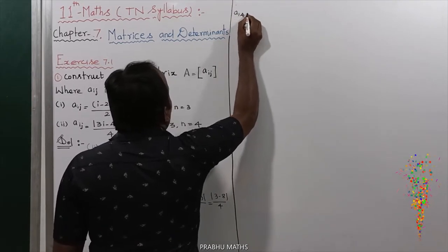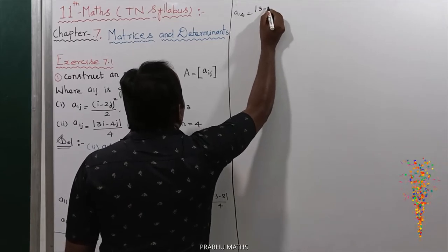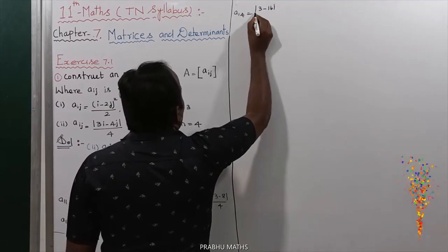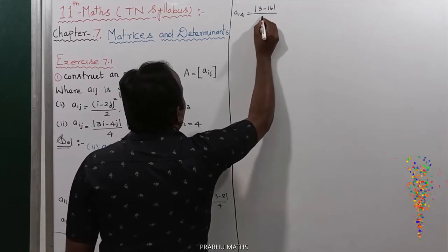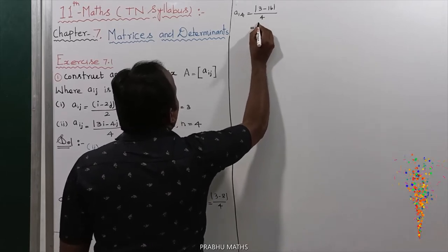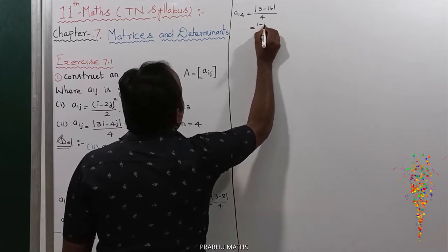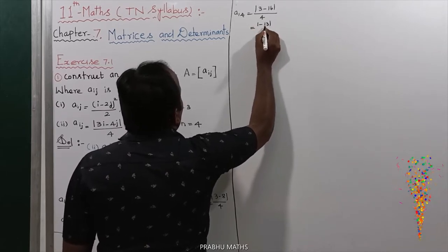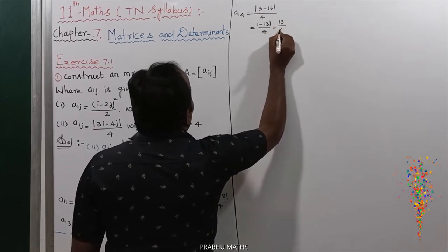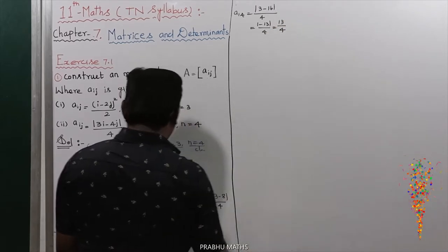Next, A14 equals the modulus of 3 times 1 minus 4 times 4, divided by 4. That is modulus of 3 minus 16, which is modulus of minus 13, divided by 4. So A14 equals 13 by 4. First row completed.